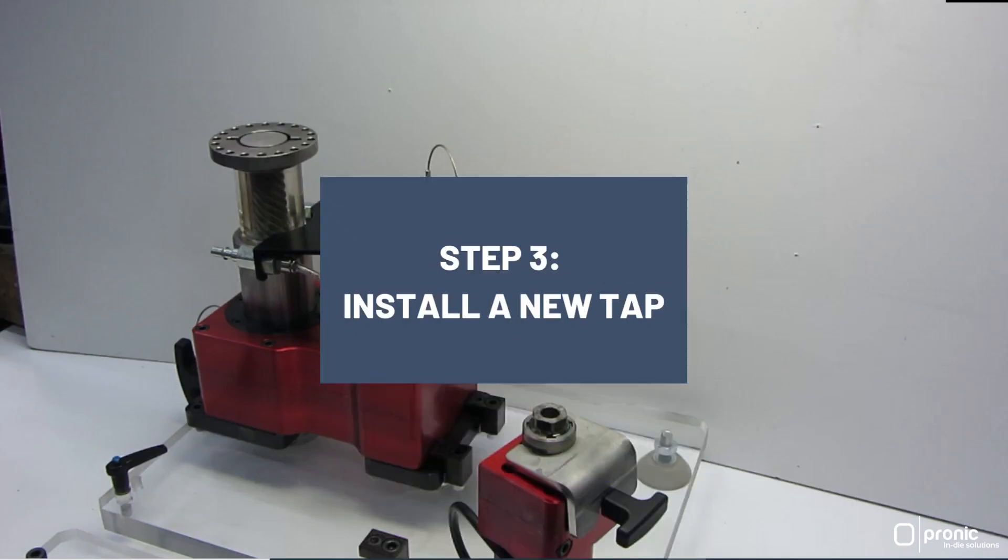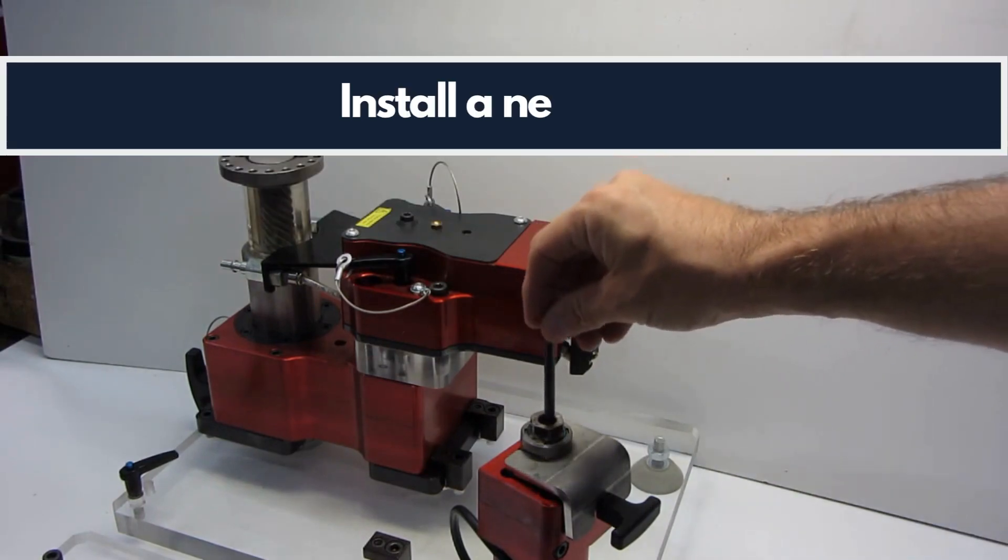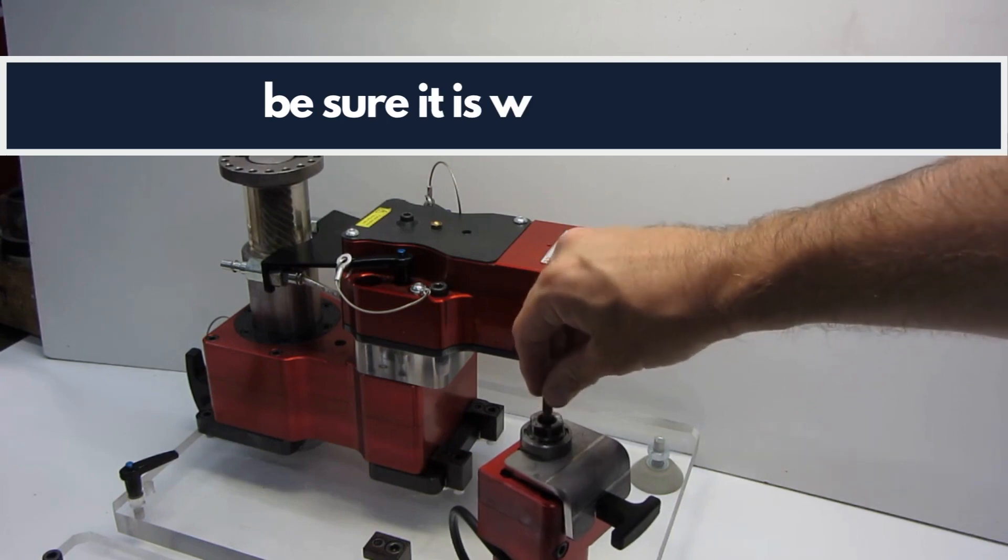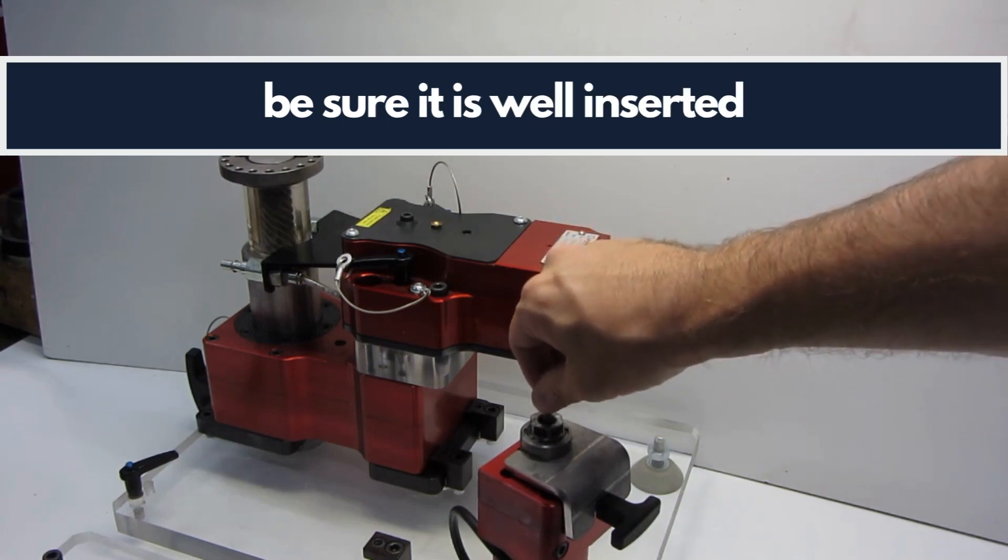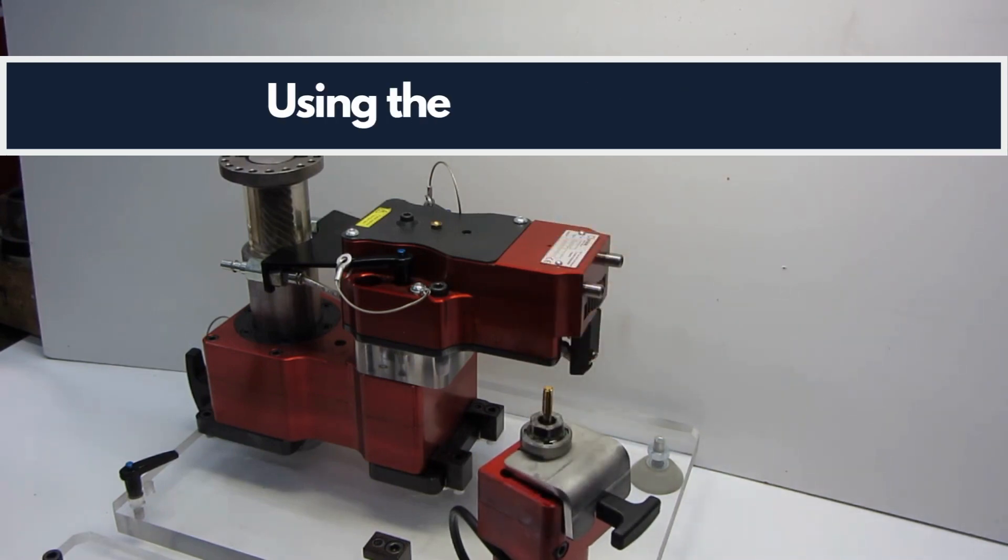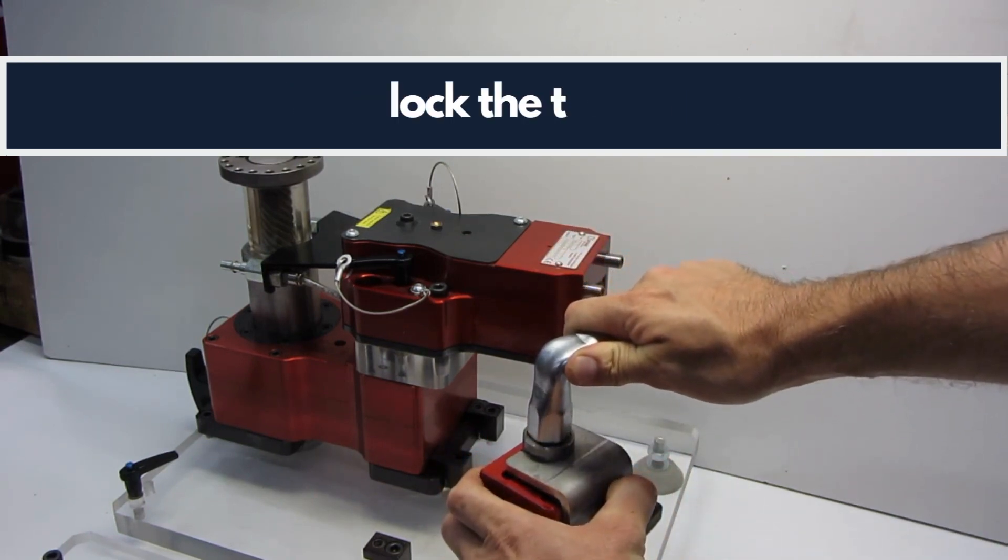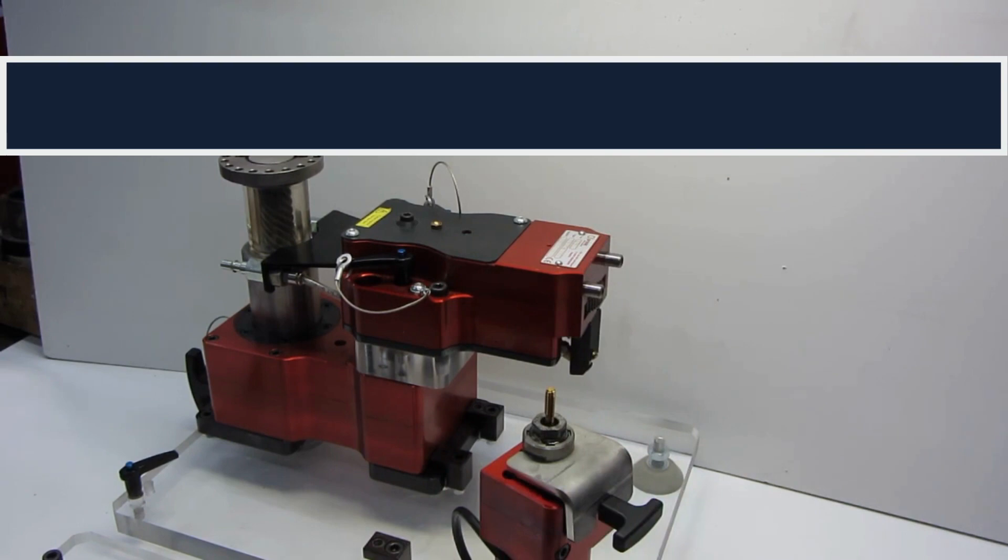Step 3: Install a new tap. Be sure it is well inserted. Using the 18mm wrench, lock the tap, then remove the locking tool from the head.